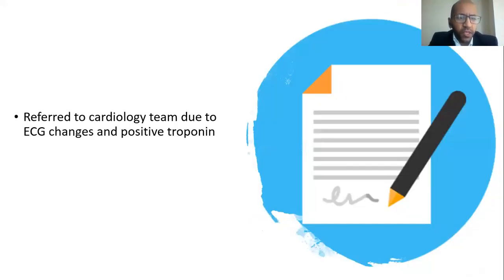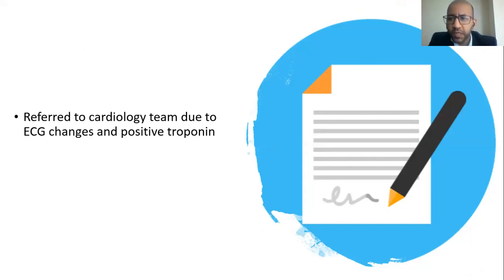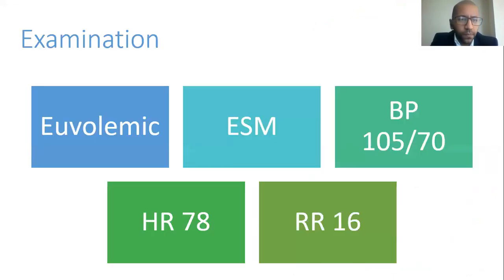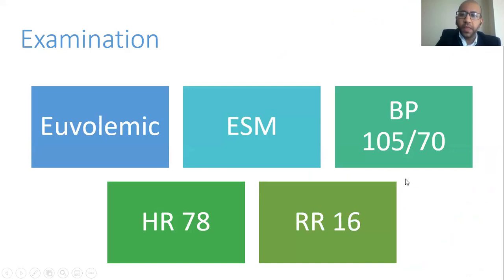She was admitted to the care of the elderly ward and referred to the cardiology team having positive troponin and some ECG changes. On examination, she was euvolemic, with a blood pressure of 106 systolic, an ejection systolic murmur, a heart rate of 78, and a respiratory rate of 16.